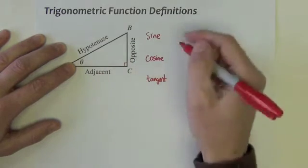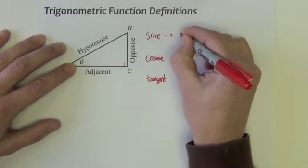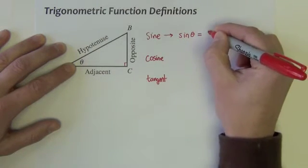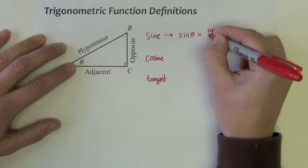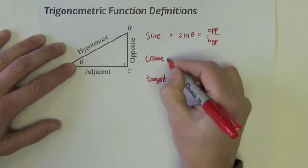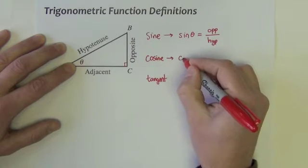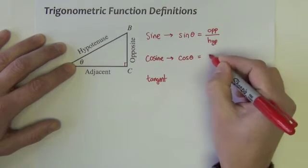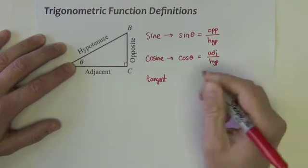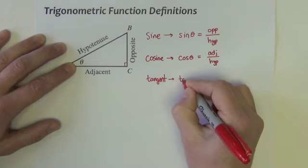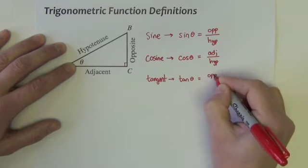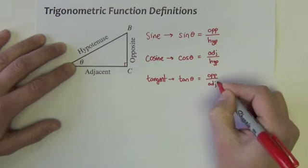The sine, abbreviated S-I-N, sine of angle theta is equal to the length opposite divided by the hypotenuse length. Sine is opposite over hypotenuse. The cosine, abbreviated C-O-S, is equal to the length adjacent divided by hypotenuse. And the tangent, abbreviated T-A-N, is equal to the length opposite divided by the length adjacent.